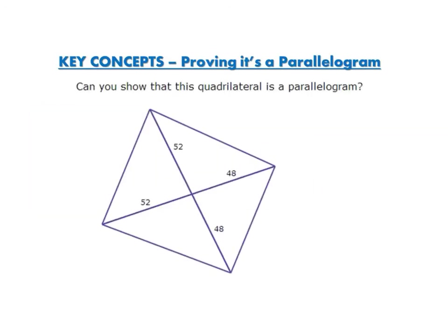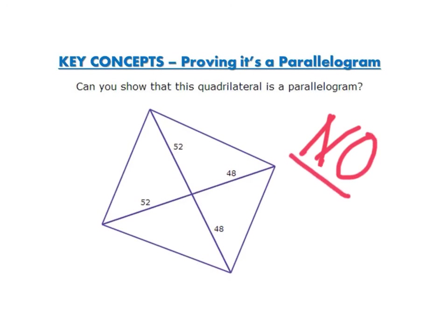Can you show that this quadrilateral is a parallelogram? I have two diagonals that intersect. One side measures 52 and the other is only 48 — and again, 52 versus 48. These line segments are not congruent, so I cannot prove this is a parallelogram. In fact, this quadrilateral is not a parallelogram.